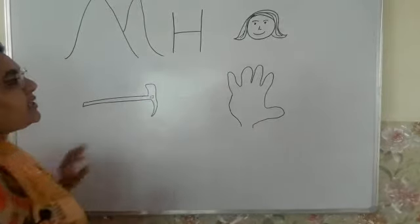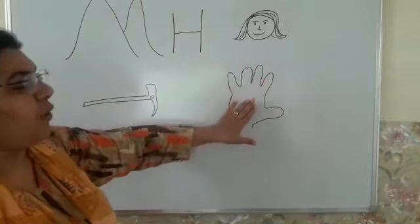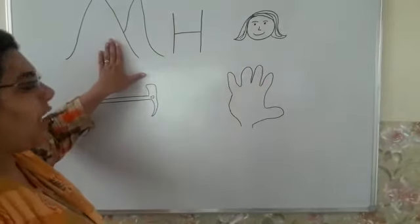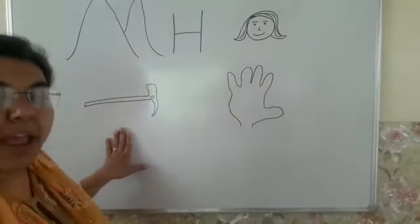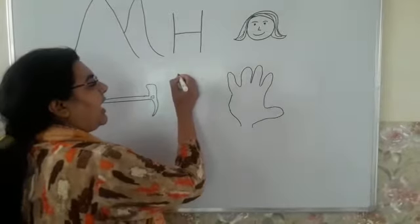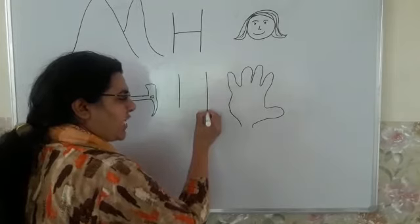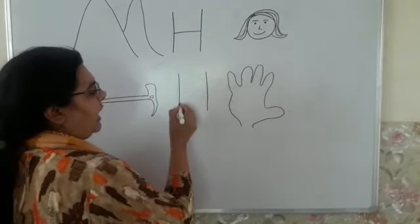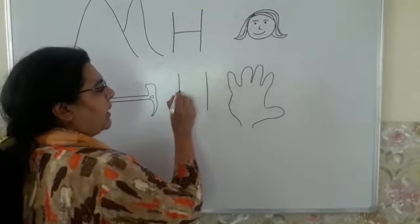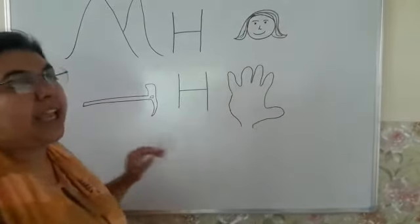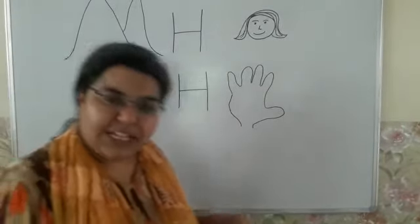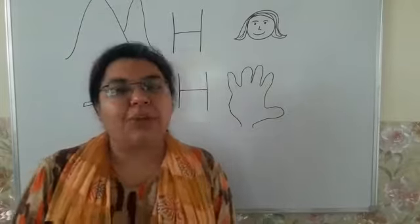So H for head, H for hand, H for hill, H for hammer. Phir se likhenge one standing line, one more standing line, two standing line, aur inko join karenge beat se, jod do seedhi sleeping line se. Ye ban gaya H. Okay, thank you children.